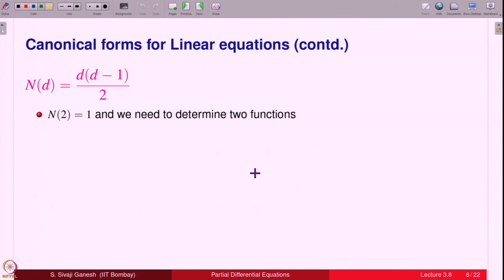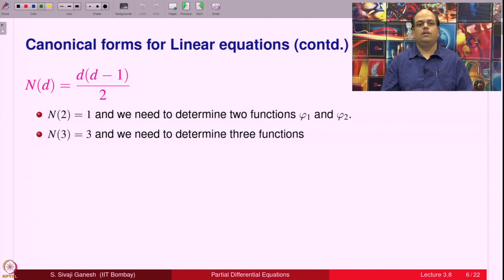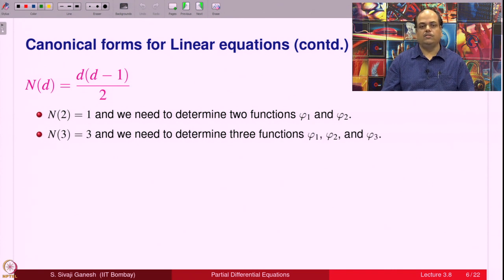When d = 2, d(d−1)/2 = 1, so we need to determine 2 functions φ₁ and φ₂ with 1 condition — that looks manageable. When d = 3, d(d−1)/2 = 3, so we have 3 equations and 3 unknowns — they are nonlinear equations, but at least there are 3 conditions and 3 functions, which maybe looks reasonable.